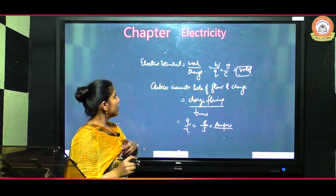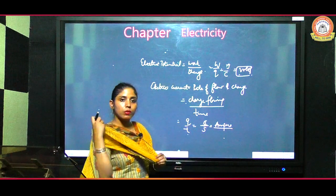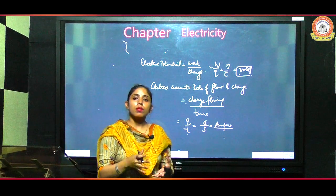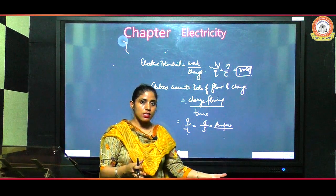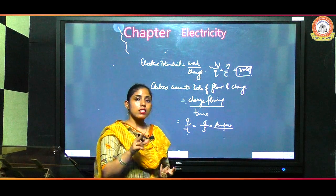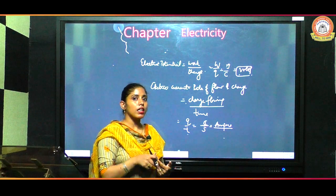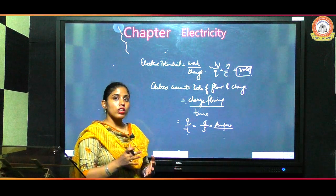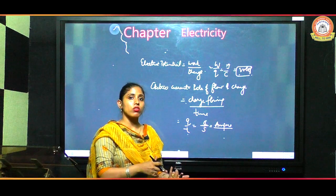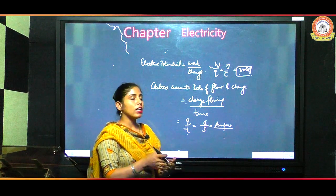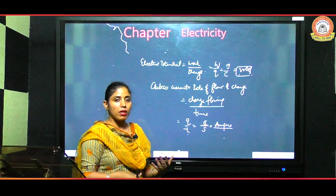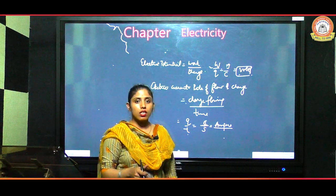Now you must know the difference between electric potential and electric current. Electric current is simply the flow of charges, whereas electric potential is the work continuously being done by the source so that electrons can be pushed against the electrostatic force of repulsion and can reach the positive terminal of the battery by completing the whole circuit.